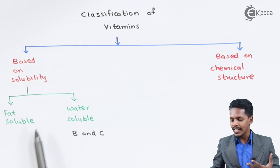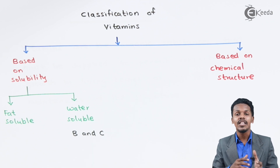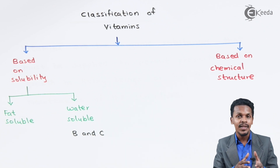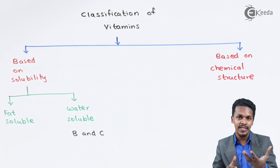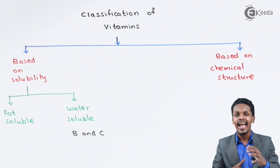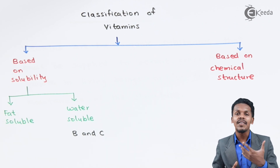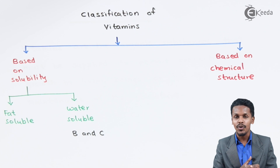Talking about the fat-soluble vitamins: vitamin A, vitamin D, vitamin E, and vitamin K. These are fat-soluble and they can be stored in our body in the liver, which plays a very vital role. Vitamin D is also a fat-soluble vitamin, so it can be stored in fat, and whenever sunlight hits our body there is formation of vitamin D.